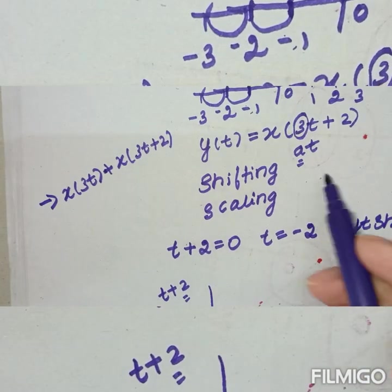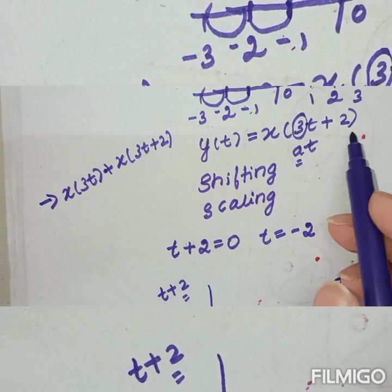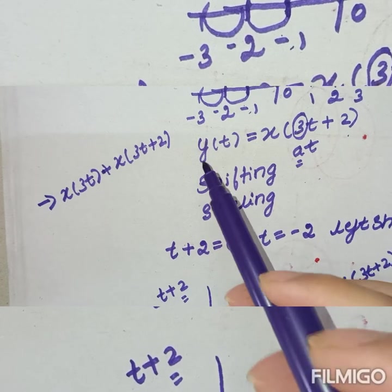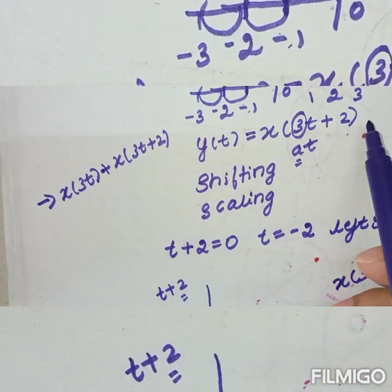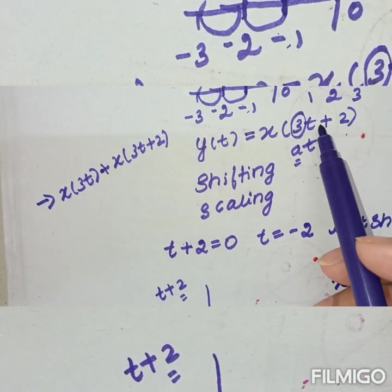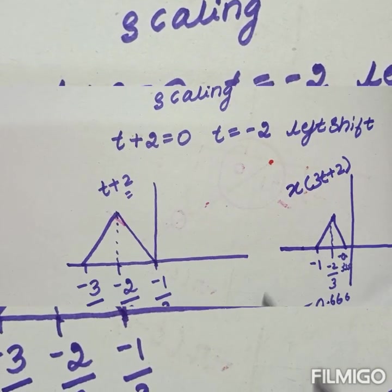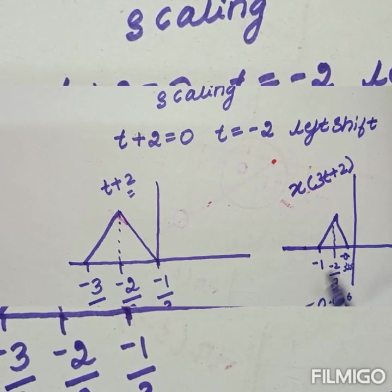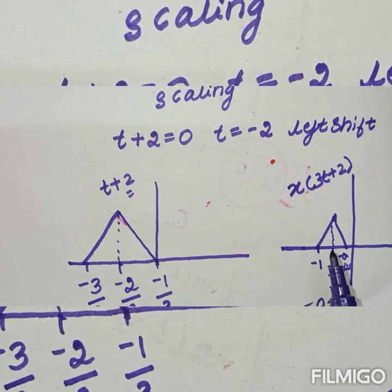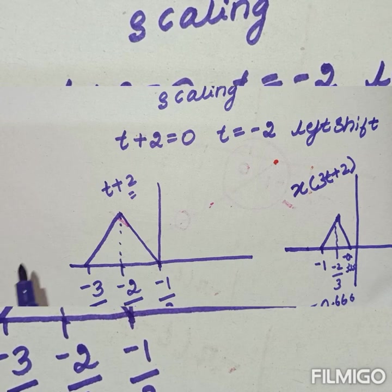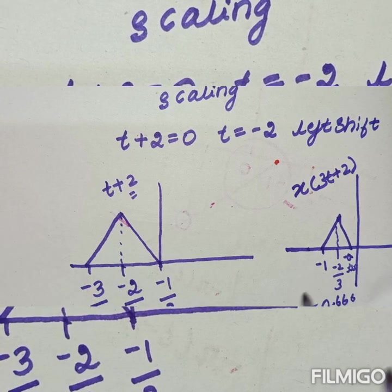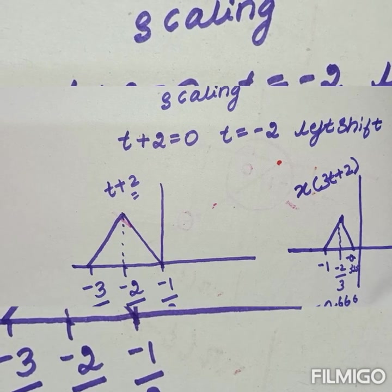We have x of 3t plus 2 from before. We are going to add it with x of 3t. Now we are going to find x of 3t separately from the given original signal.